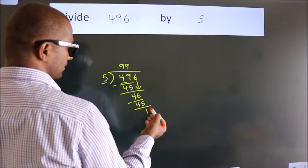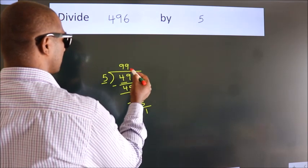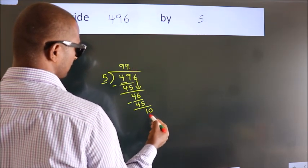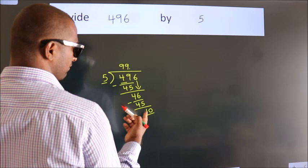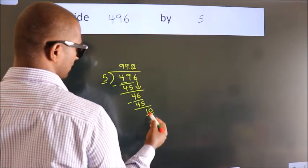After this, no more numbers to bring it down. So what we do is, we put a dot and take 0. So 10. When do we get 10 in the 5 table? 5 twos, 10.